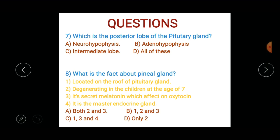What is the fact about the pineal gland? Some statements are given about the pineal gland — identify the correct facts: 1) located on the roof of the pituitary gland, 2) degenerating in children at the age of seven, 3) it secretes melatonin which affects oxytocin, 4) it is the master endocrine gland. Options: both 2 and 3, only 1, both 1 and 3, both 3 and 4, or only 2.